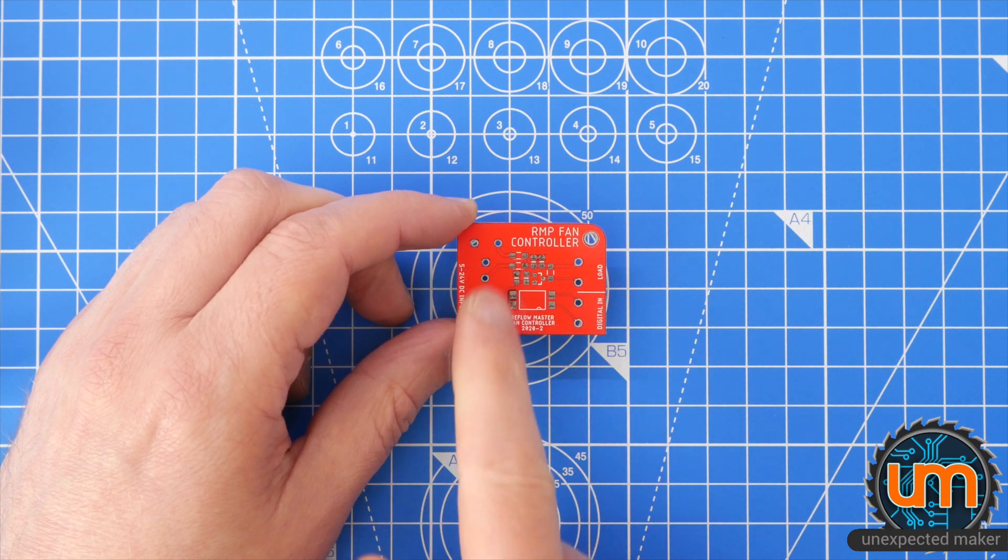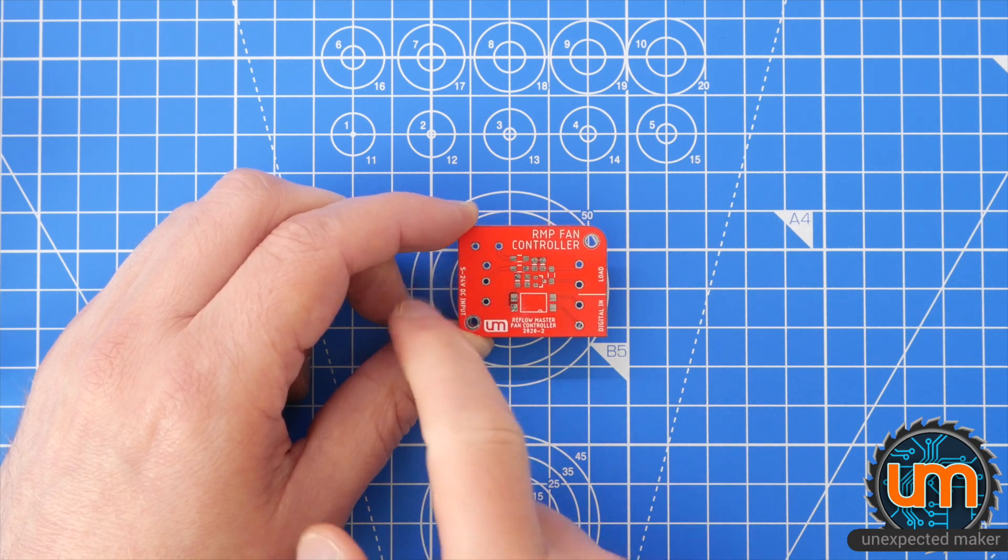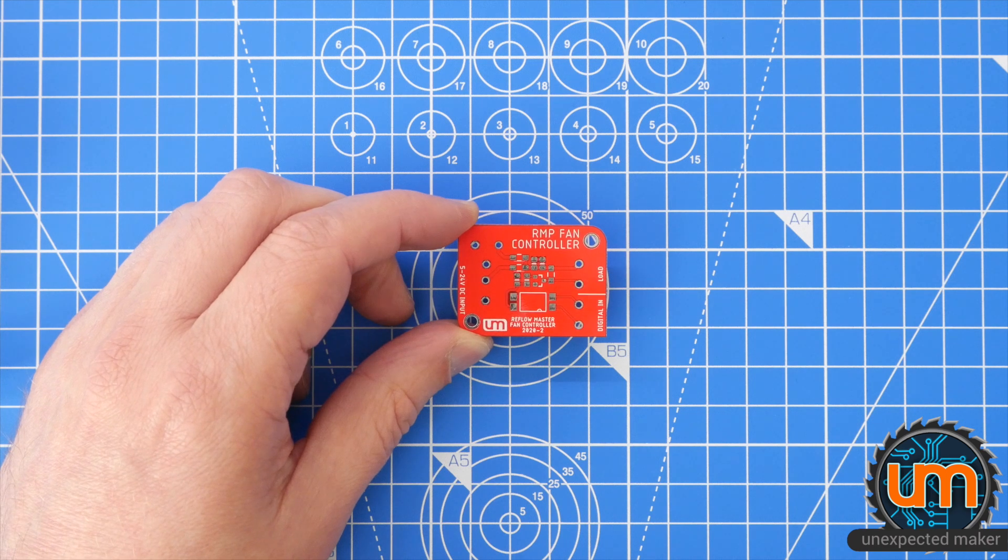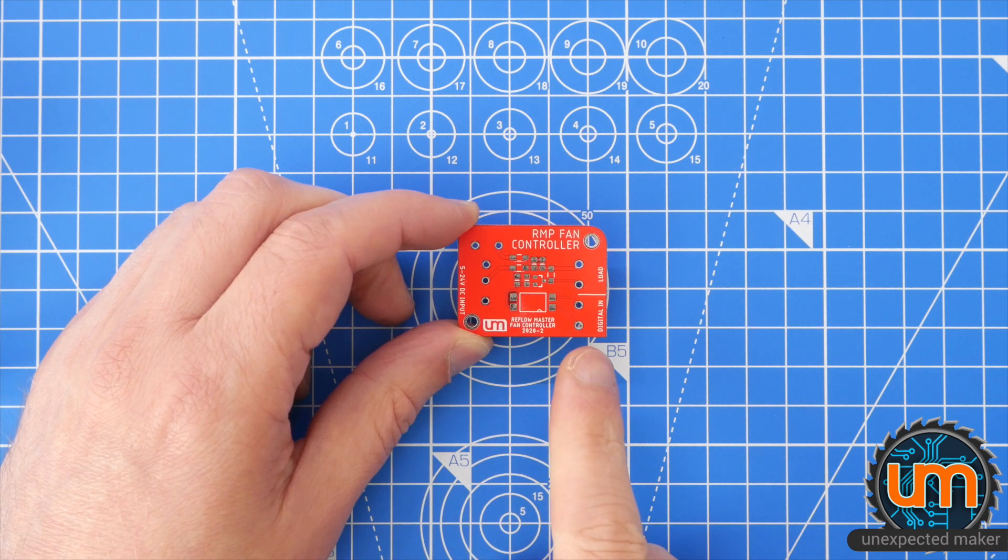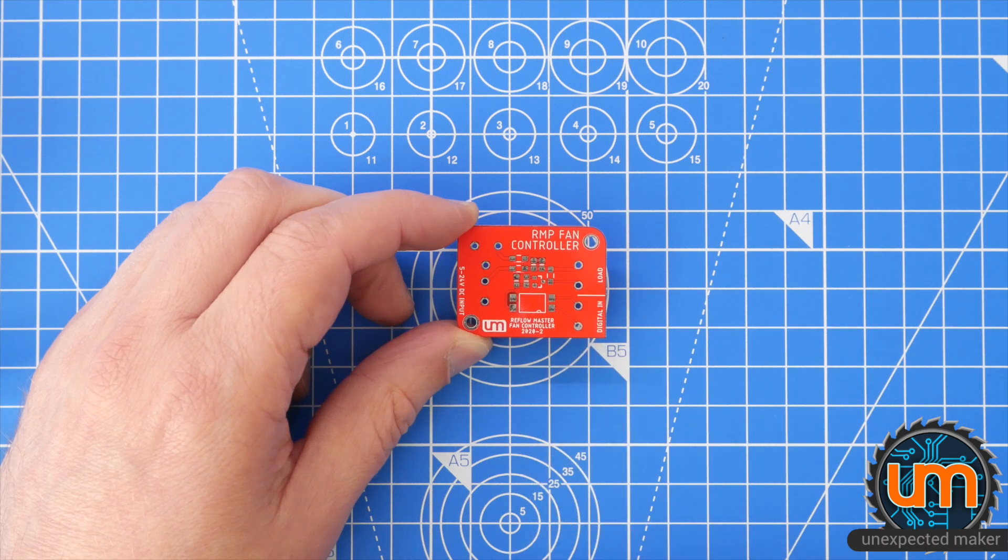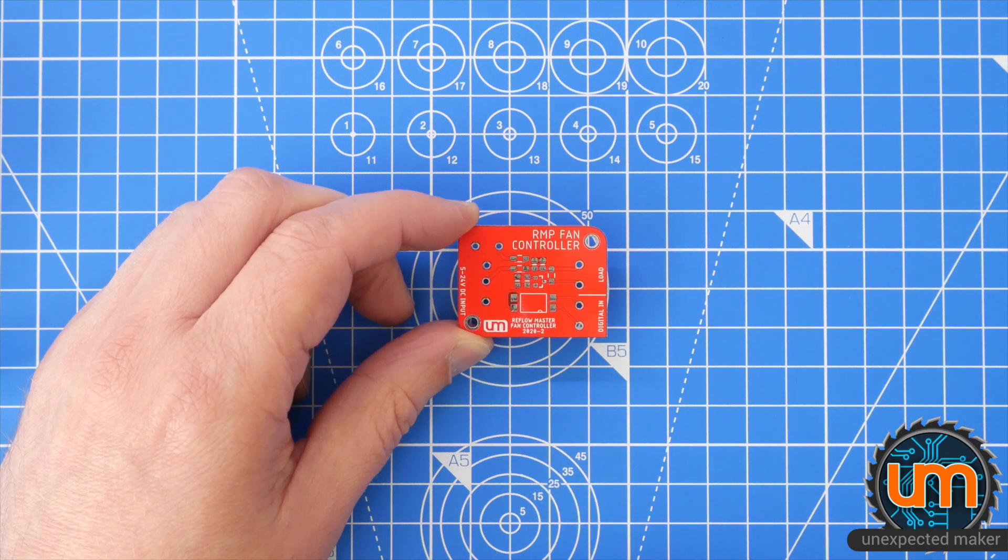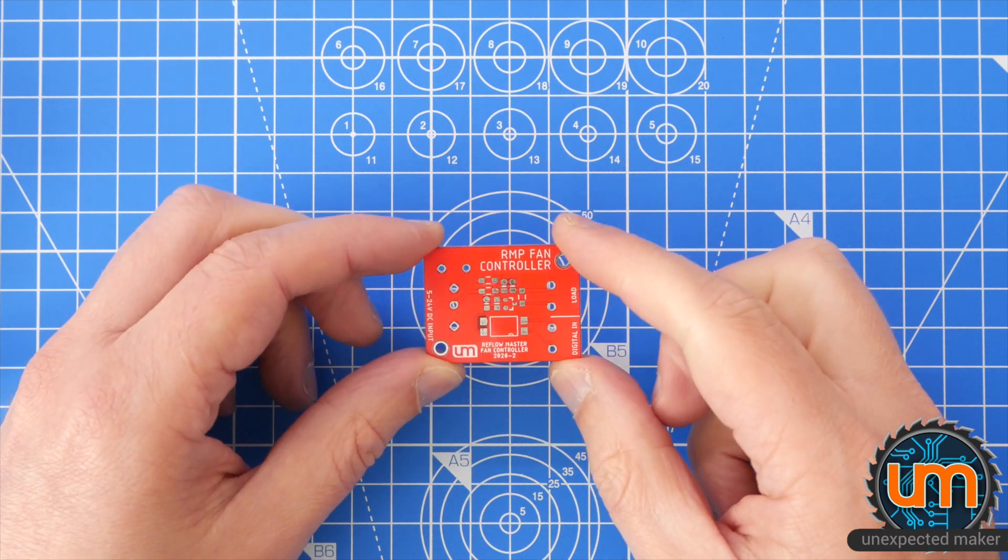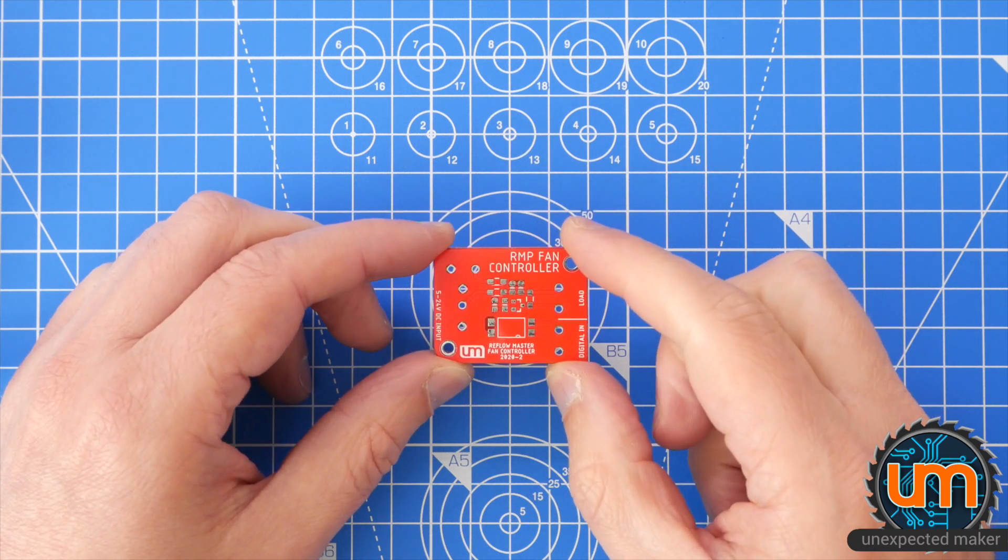There's back feed protection in case you have both powers connected at the same time. You can obviously not mix them, it's got to be one voltage only. And the idea is you can turn on and off whatever is on the load from the digital in. Sounds like a perfect solution. Does it work? I have no idea because I only just got these and I haven't built one yet. So let's build one and find out.